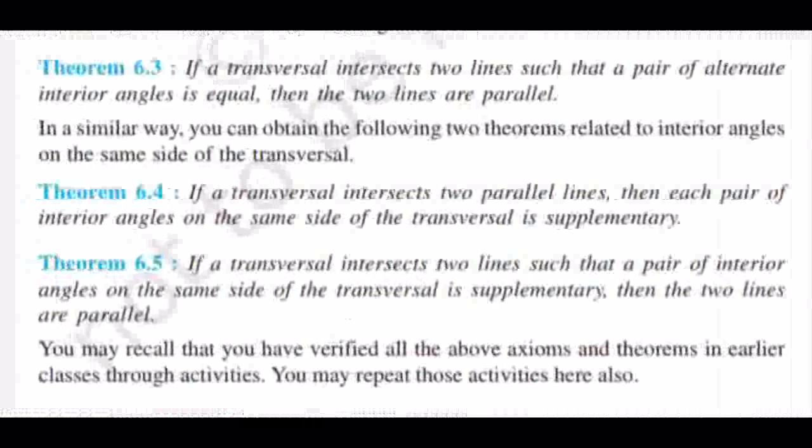The next theorem: if a transversal intersects two parallel lines, then each pair of co-interior angles on the same side of the transversal is supplementary. Supplementary means the sum of two angles is 180 degrees. So the sum of co-interior angles, or angles on the same side of the transversal, is 180 degrees. If a transversal intersects two parallel lines, then co-interior angles are supplementary.